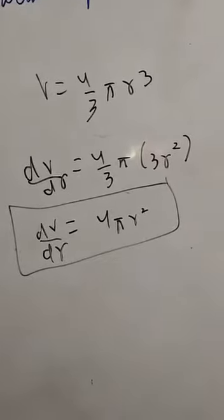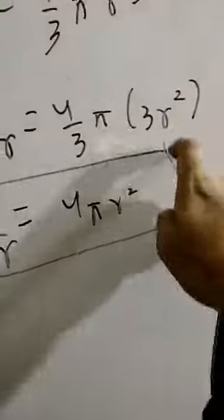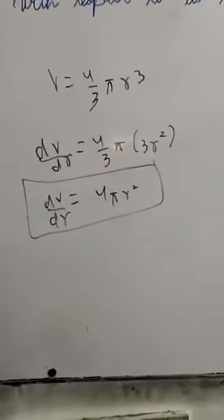Now, let's take this derivative with respect to r. Look, 4 upon 3 pi is constant. The power is lower. 3 r squared, 3 r squared. 3 cancel. 4 pi r squared.